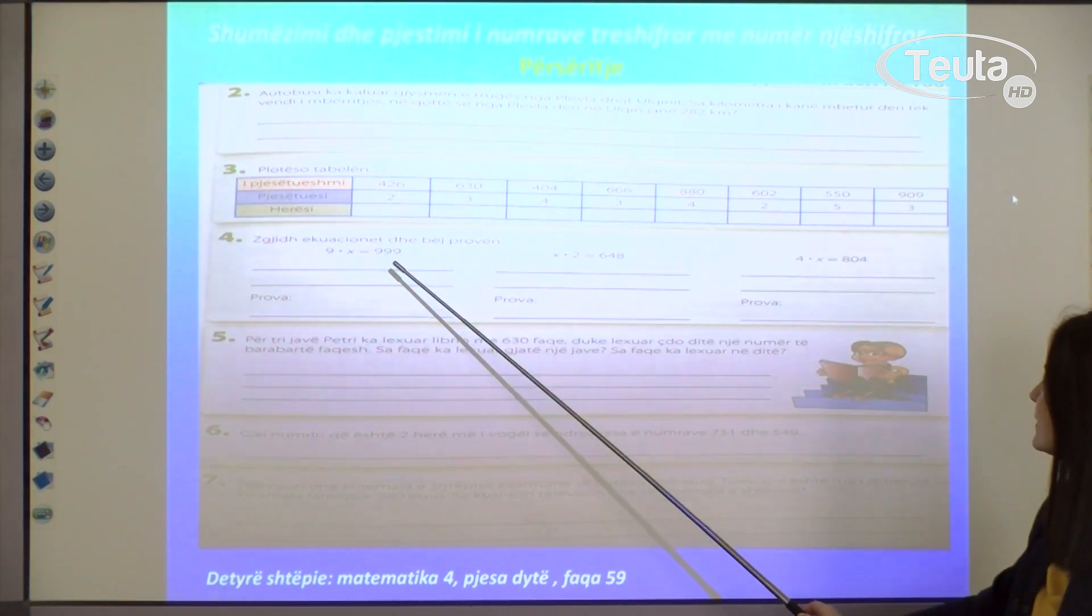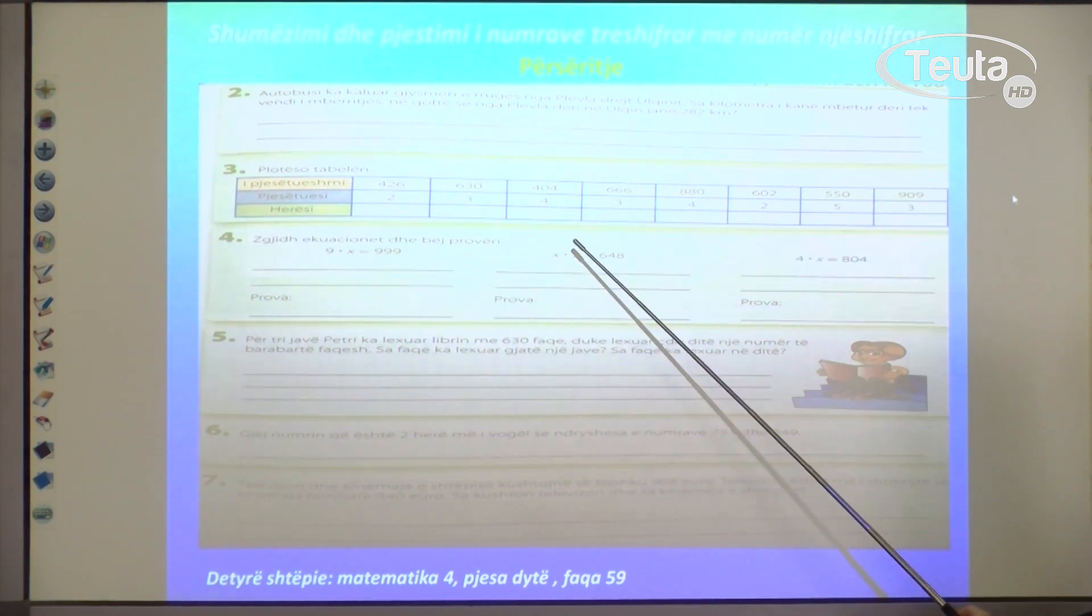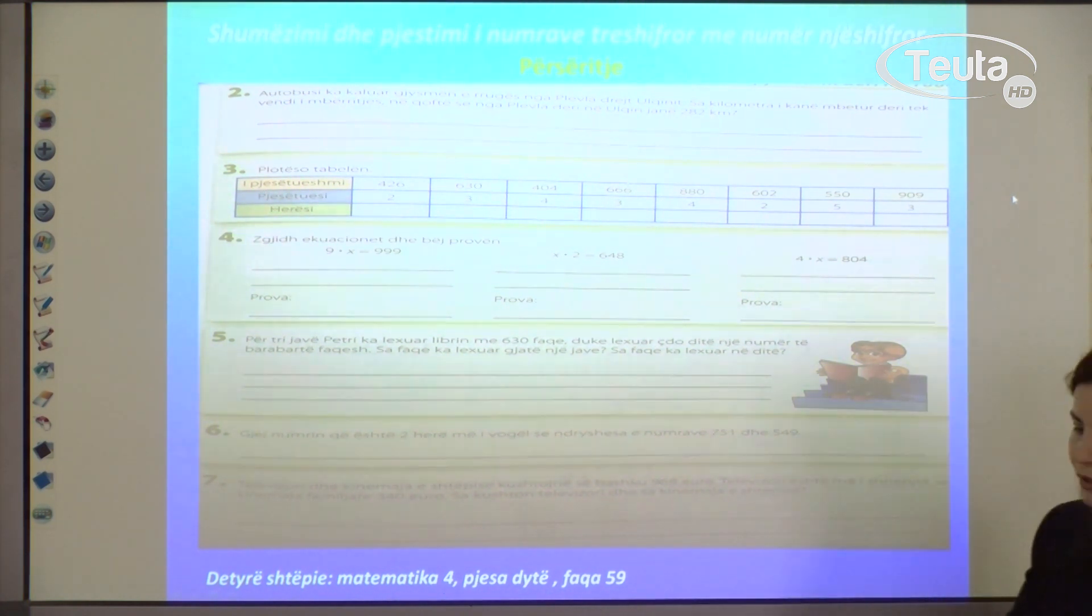We have to solve the equations. 9 times x equals 999. x times 2 equals 648. 4 times x equals 104. We learned equations before, but we'll review them together by solving them on the board.